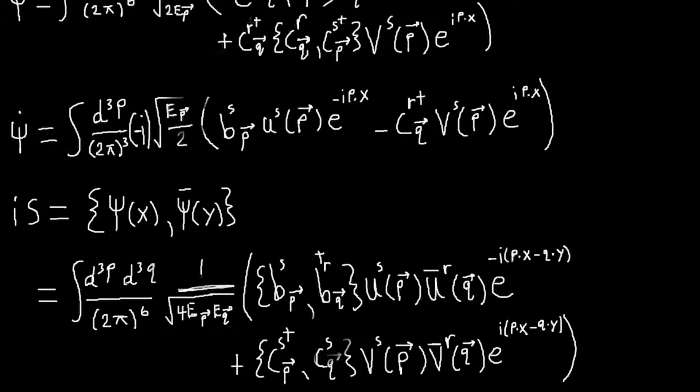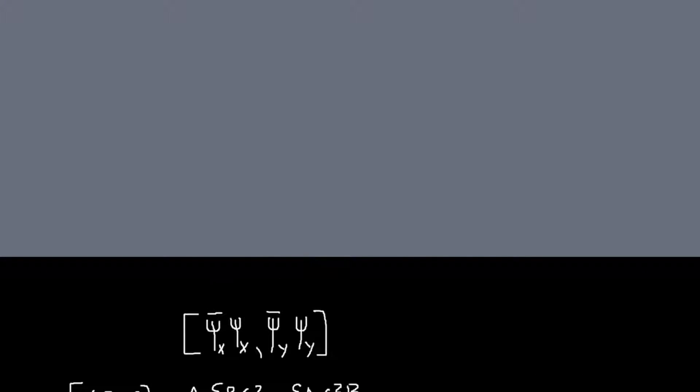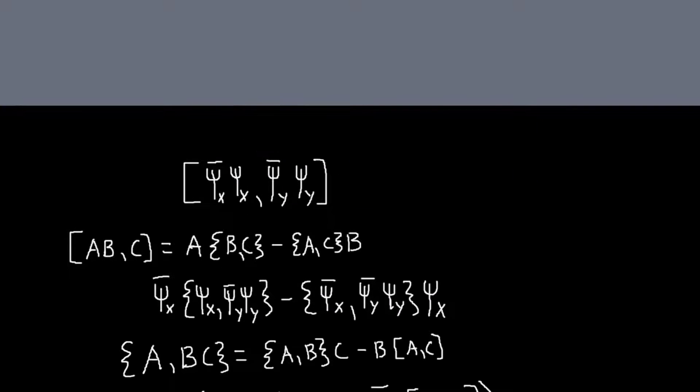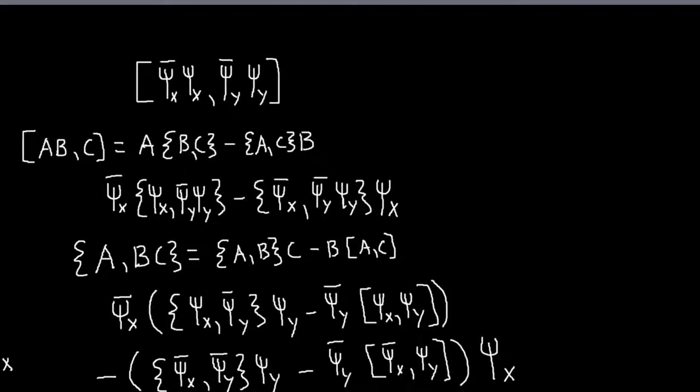but basically what Tong argues is that in our theories, we never have just single field operators. We always have the operators squared. So things like this, or Psi bar times Psi. And these products of operators, they do commute with each other. So I wanted to show that, so I did a little bit of investigating to see if that was true, and you can see all the math I did here.